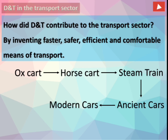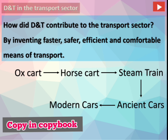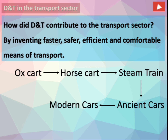Design and technology in the transport sector: DT has contributed by inventing faster, safer, efficient, and comfortable means of transport. We can see the evolution from ox cart to horse cart, to steam train, to ancient cars, and to modern cars. From ox cart to modern cars there has been great improvement in design and technology. Nowadays cars are very reliable, safe, energy efficient, and more comfortable.